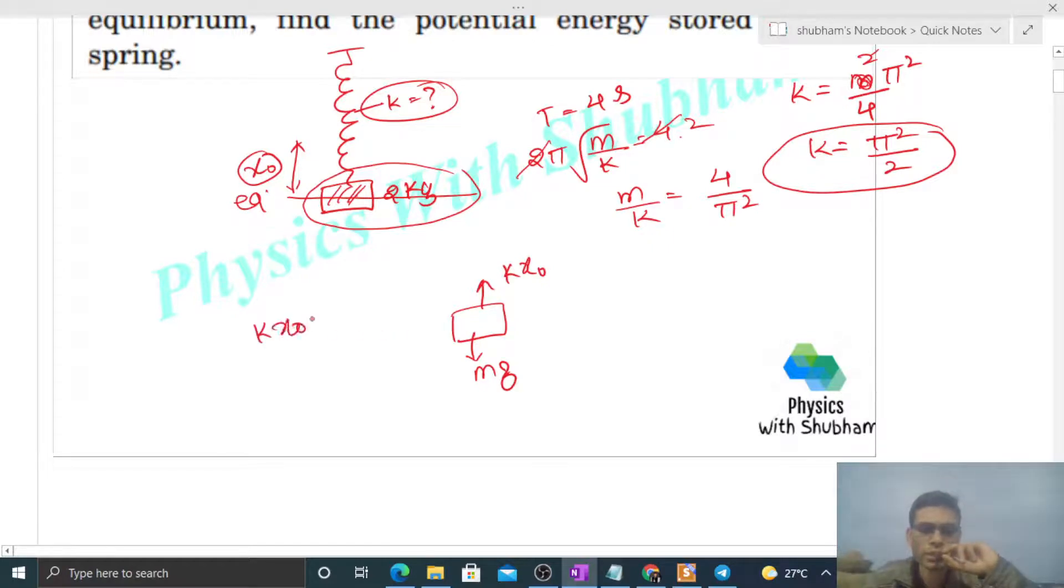The spring force upward is k into x₀. So net force is zero. It means k into x₀ should be equal to mg. So x₀ will be mg by k, right?